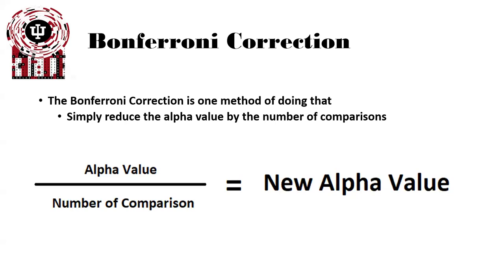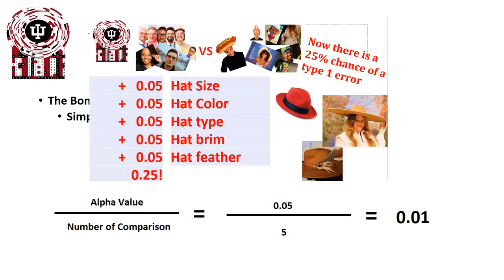A Bonferroni correction is one method of doing that by simply reducing the alpha value by the number of comparisons. To do a Bonferroni, we take the alpha value and divide it by the number of comparisons we have, giving us our new alpha cutoff for statistical significance. Going back to our example of hats causing glaucoma: we have five different comparisons — hat size, hat color, hat type, brim, and feathers. If our initial alpha value is 0.05, we divide 0.05 by 5, resulting in a new alpha value of 0.01 as our cutoff.